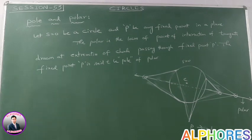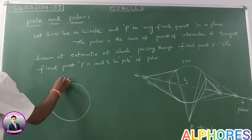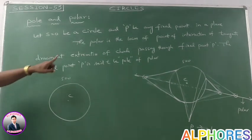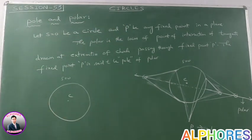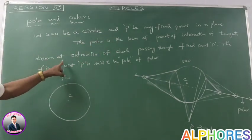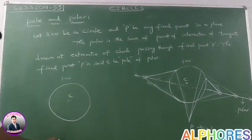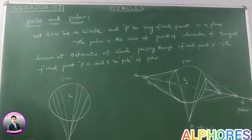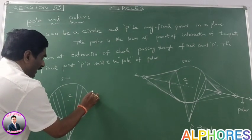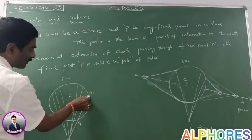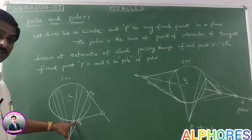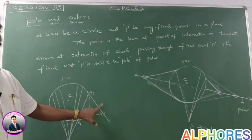Explanation: Suppose S=0 is one of the circle with center C, and P is any fixed point in the plane. From this fixed point, infinite number of chords are possible. This chord cuts the circle at A1, B1. The tangent drawn at A1 and B1 intersects at a particular point. The locus of point of intersection of tangents drawn at extremities of the chords is nothing but a polar.